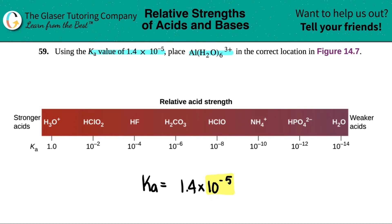So where on this Ka value would 10 to the negative 5th be? Well, 5 is right in between 4 and 6. So times 10 to the negative 5th would be right around here.